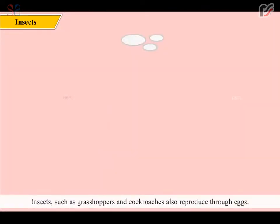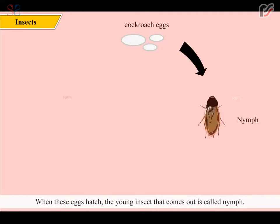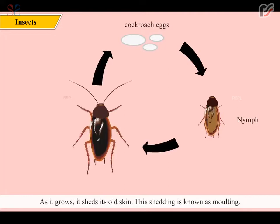Insects such as grasshoppers and cockroaches also reproduce through eggs. When these eggs hatch, the young insect that comes out is called a nymph. As it grows, it sheds its old skin. This shedding is known as molting. After molting several times, a nymph becomes an adult and resembles the parents.